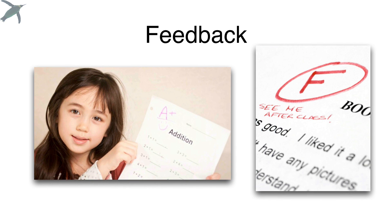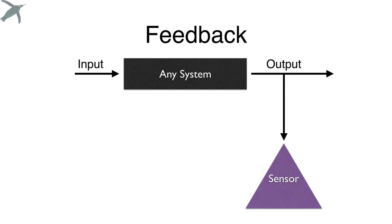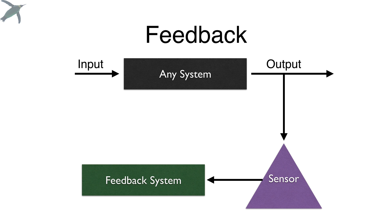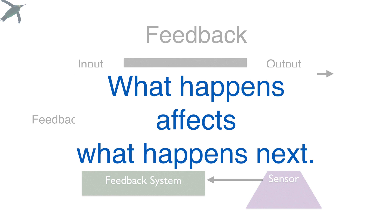You all know in some general sense what feedback is. Feedback is what you get from your instructor when you submit an exam or an assignment — it tells you what to do next. If you do well, you're going to do the same things to keep doing well. If you didn't do so hot, you've got to change what you're doing. So in a general sense, any system has inputs and outputs, and feedback simply means: what happens affects what happens next.